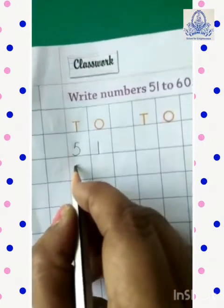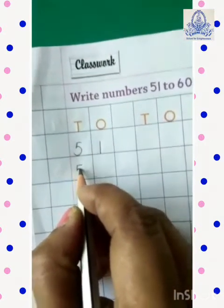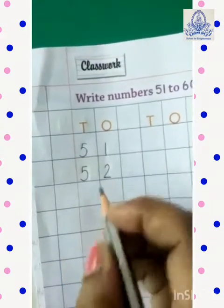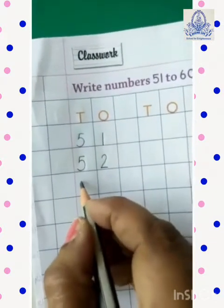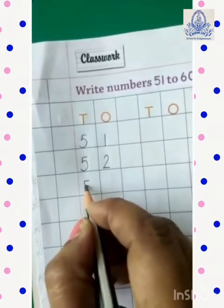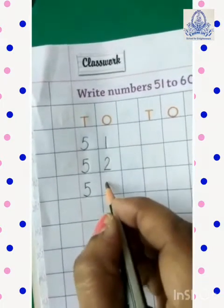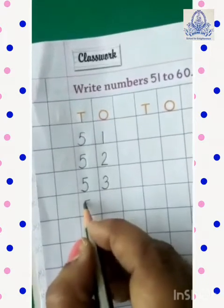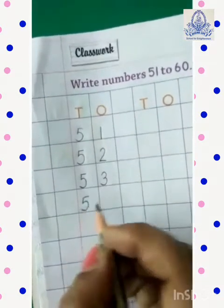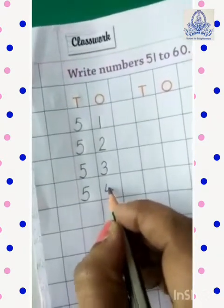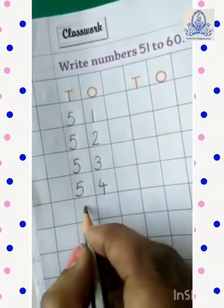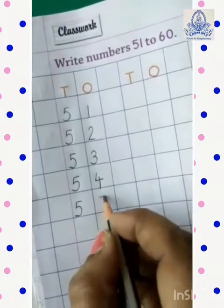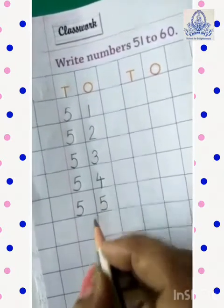Next, 5, 2, 52. Then, 5, 3, 53. Next, 5, 4, 54. Then, 5, 5, 55.